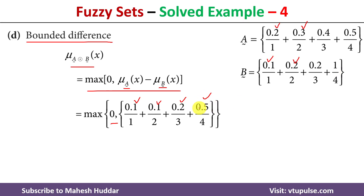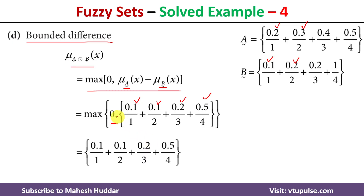We should not take a negative value — we need to take the absolute difference, so that result becomes 0.5. We then compare this against 0 and take the maximum. Between 0 and 0.1, the maximum is 0.1; between 0 and 0.1, the maximum is 0.1; between 0 and 0.2, the maximum is 0.2, and so on. This is how we calculate the bounded difference between two fuzzy sets.